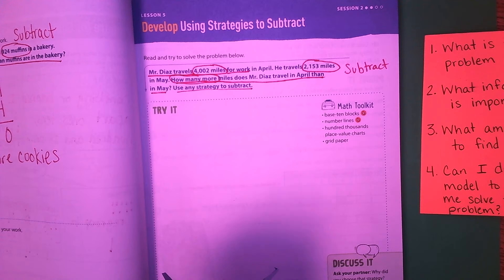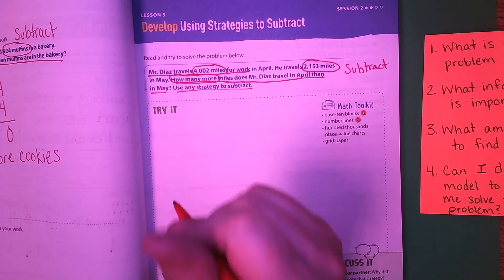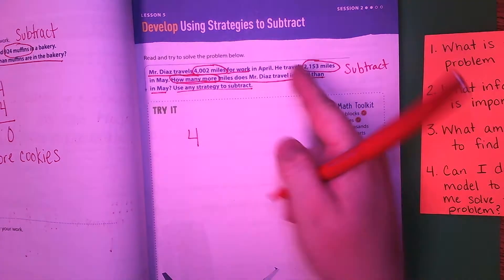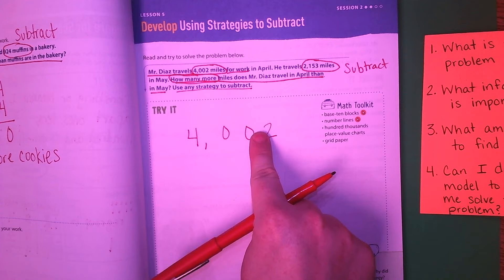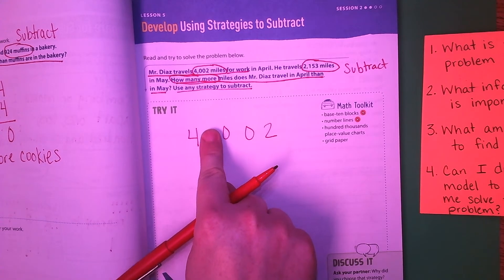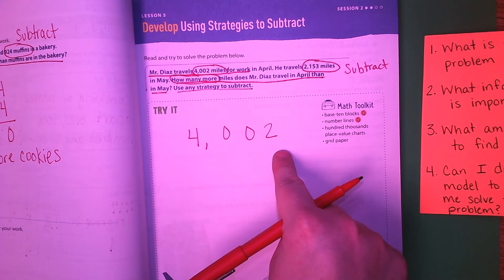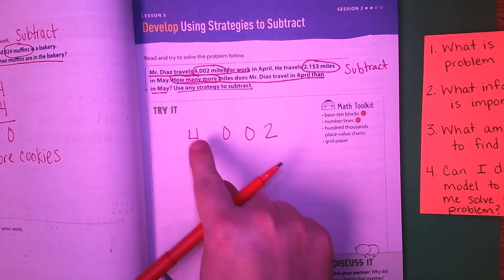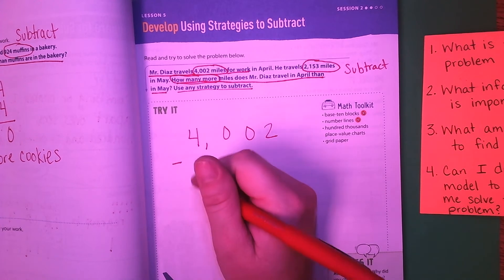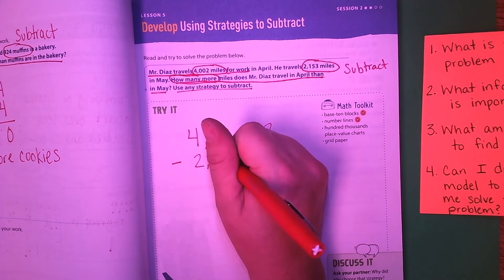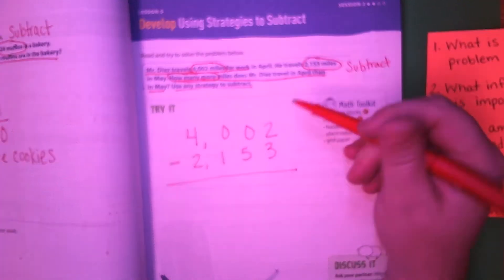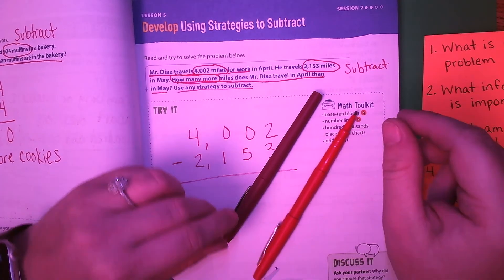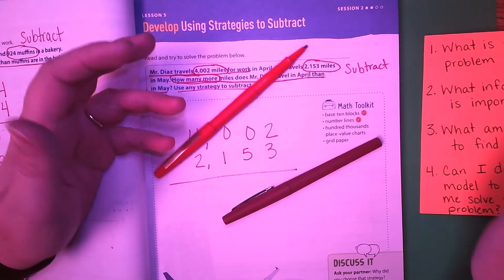Our model says we can use any strategy to subtract. If you prefer a different strategy than what I'm using, you may go ahead and use that. But I'm going to use the traditional subtraction method. I'm going to write my biggest number on top. Notice how I'm making sure I'm spacing these numbers out — I can almost fit my entire finger between all of these numbers. When you space numbers out like this, it helps them stay lined up.